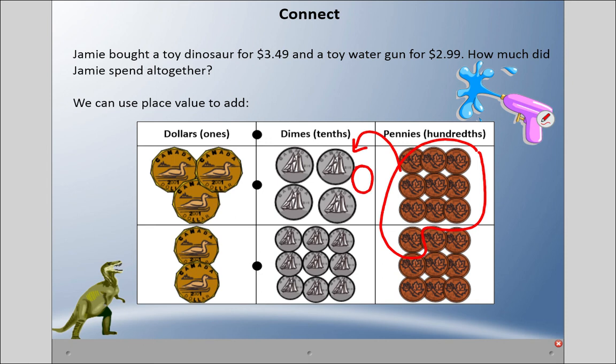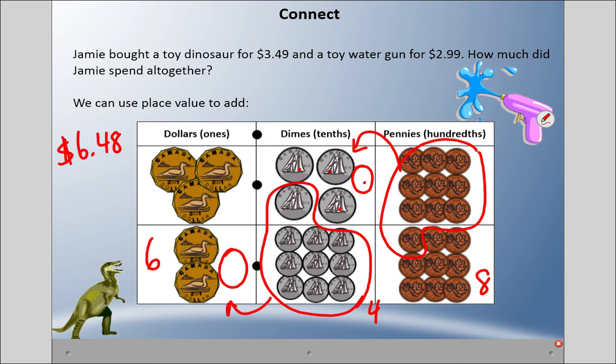That leaves me with eight down below here. Then I'm going to count up all my dimes. I have nine down here. Maybe I'll borrow one of these guys—that makes a dollar, so I'll add an extra loony there. I'm left with one, two, three, four. So I'm going to put a four there to remind myself. Then here I have one, two, three, four, five, six dollars. So in the end, there is six dollars and 48 cents, and so that's how much Jamie spent altogether—six dollars and 48 cents.